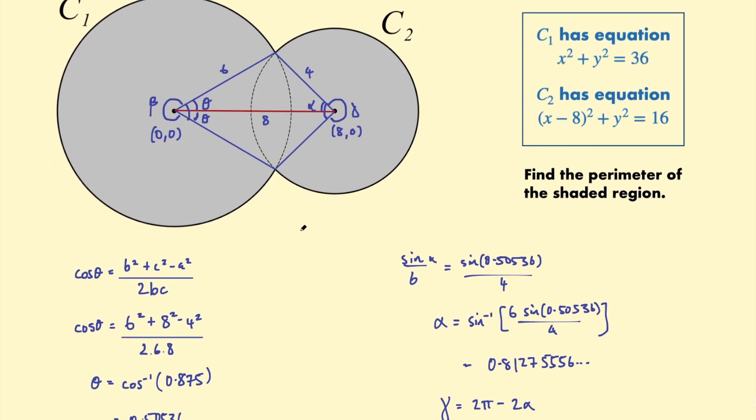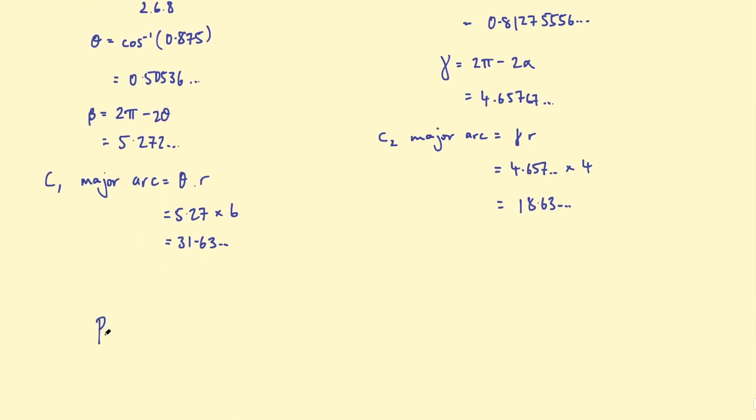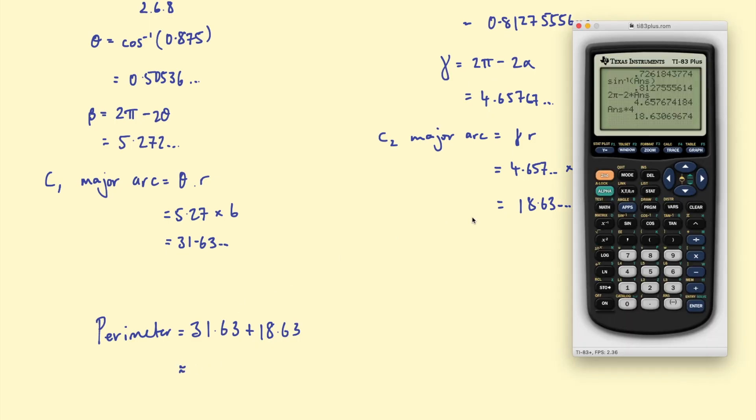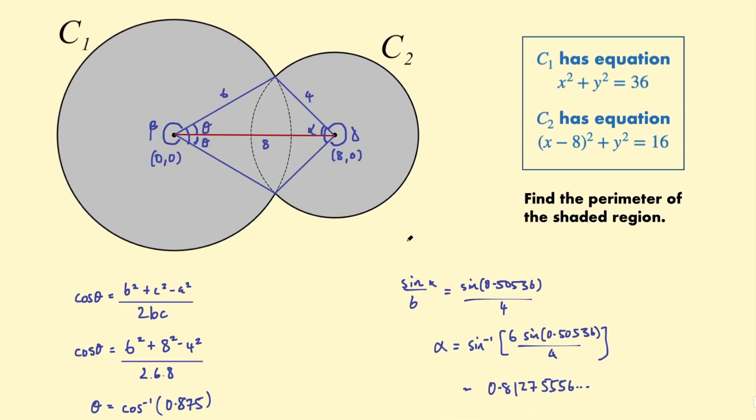Okay so I have this major arc. I have this major arc. All I need to do is add them together to get the perimeter. So the total perimeter is going to be 31.63 approximately plus 18.63. Let's calculate that then. I get 50.26 which I'm going to round off to 50.3. So that's accurate to one decimal place. Okay so that is the perimeter of these two overlapping circles.